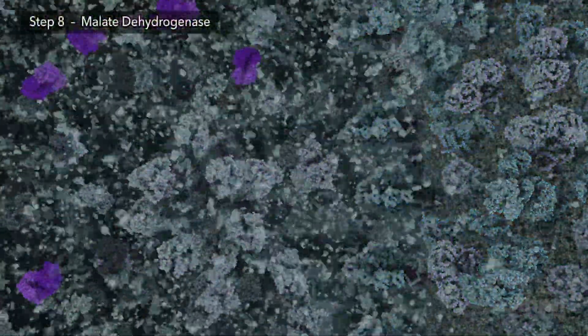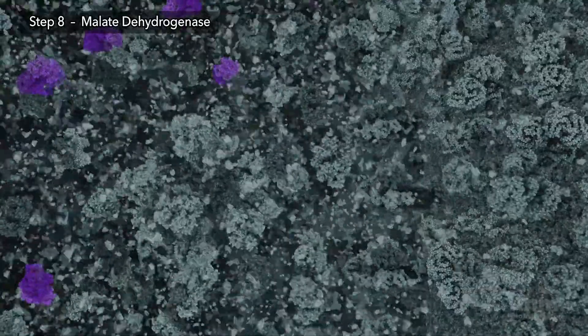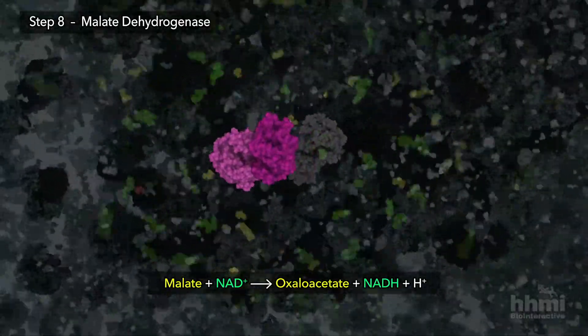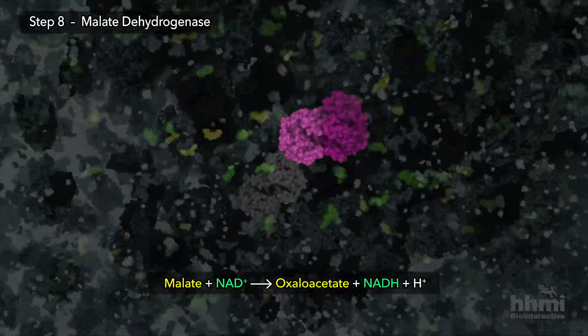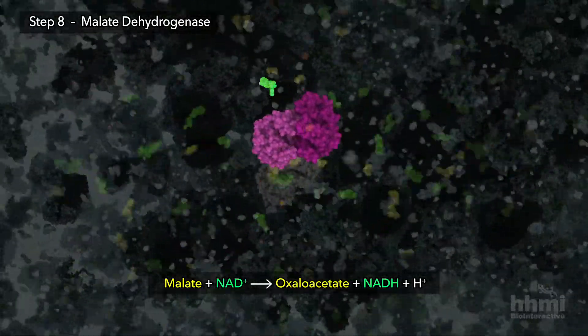The final step of the citric acid cycle uses malate to regenerate oxaloacetate, transferring electrons to coenzyme NADH, which supplies the electron transport chain.